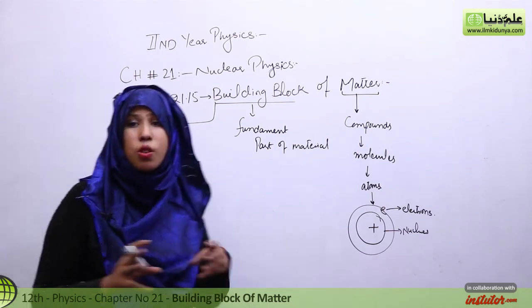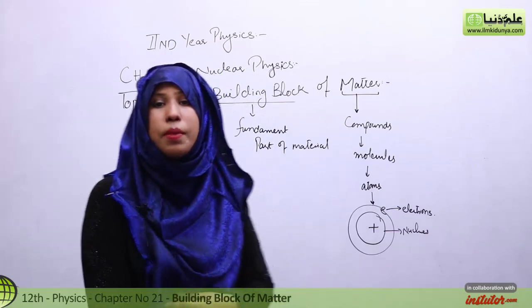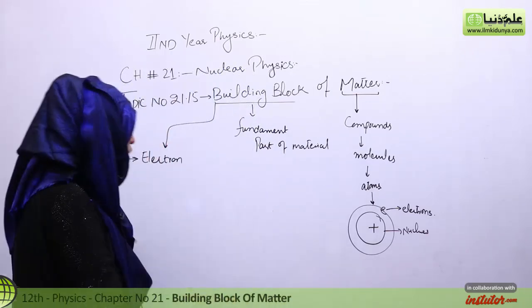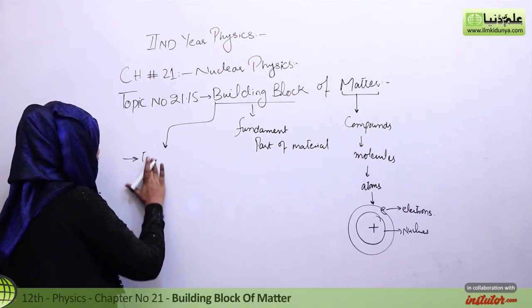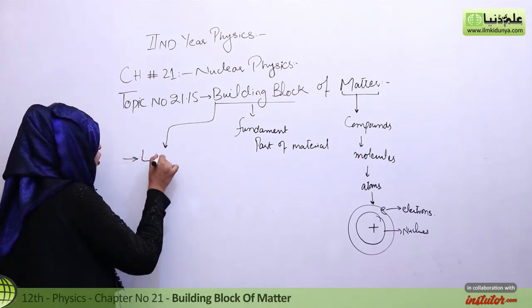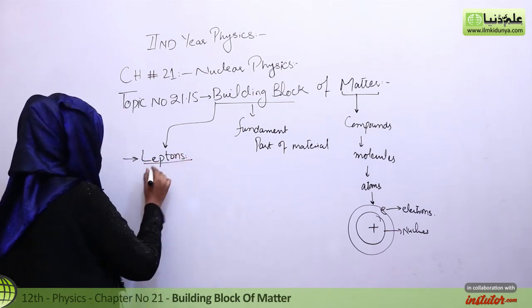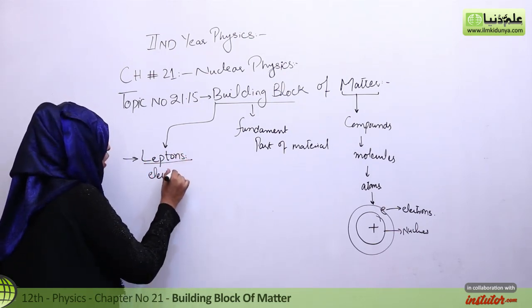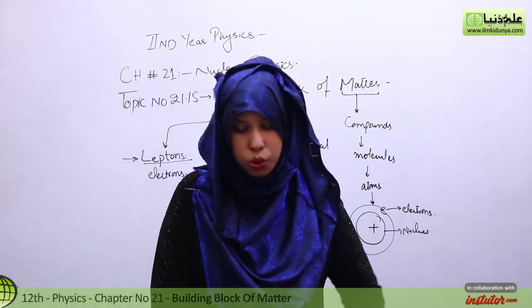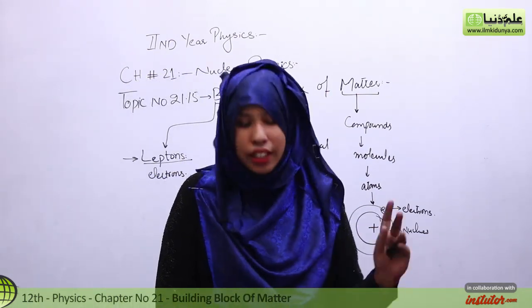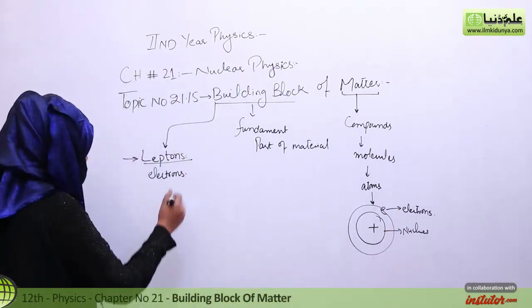The electron is a fundamental particle. We write it in a category called leptons. So basically, in the category of leptons, the first thing that comes is electrons. In addition to electrons, there are also other fundamental particles in the lepton category. There are also muons in the category of leptons.